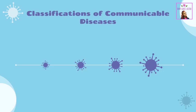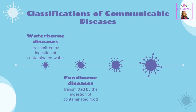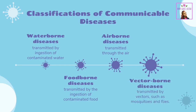Classifications of Communicable Diseases: Based on the mode of transmission of the infectious agent, communicable diseases can be classified as waterborne diseases, transmitted by ingestion of contaminated water; foodborne diseases, transmitted by ingestion of contaminated food; airborne diseases, transmitted through the air; and vectorborne diseases, transmitted by vectors such as mosquitoes and flies.